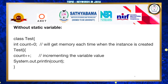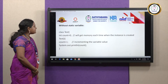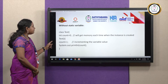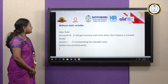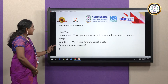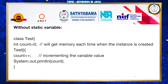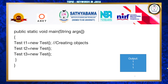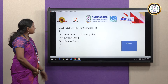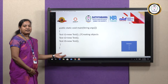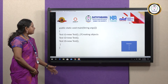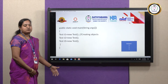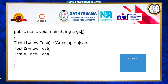Here is an example for a static variable. I have a class named 'test' with a variable count initialized to 0. In the constructor, I am incrementing the count value and printing it. In the public static void main, I am creating 3 objects: t1, t2, t3. If I use the variable as 'int count' without static, each time an object is created it is re-initialized, so the output would be 1, 1, 1.